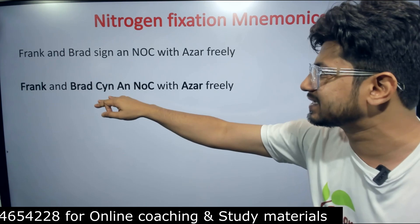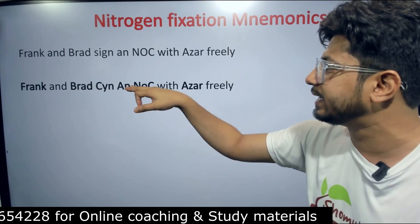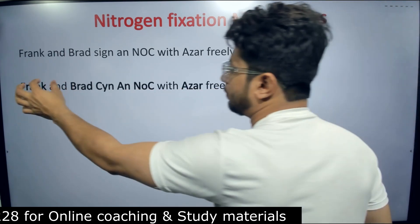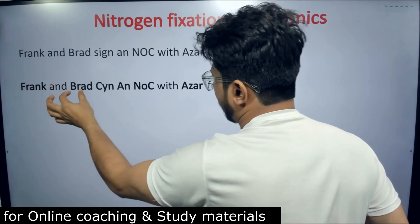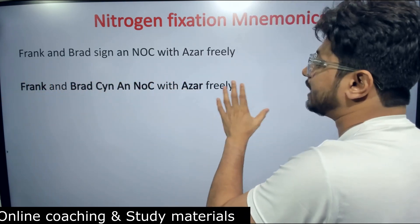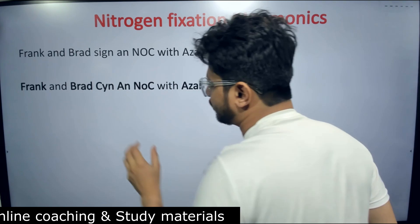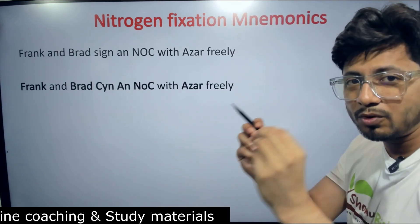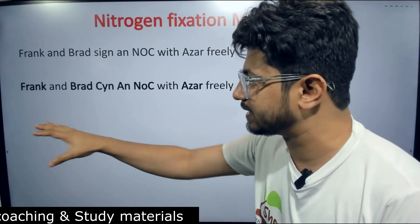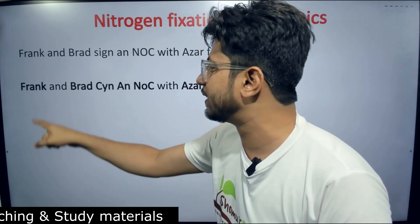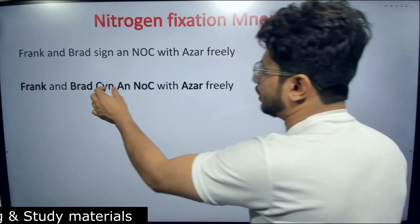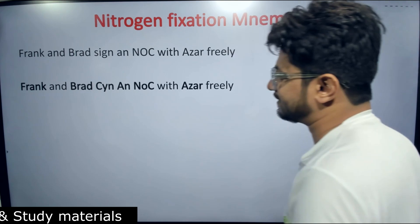Frank and Brad sign CYN and NOC with Azar freely. The bold words are: Frank, Brad, Sine, Anne, NOC, Azar. These are going to be the most important words. We will derive the name of the bacteria from all the bold words in this sentence.